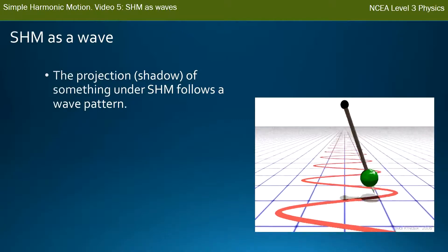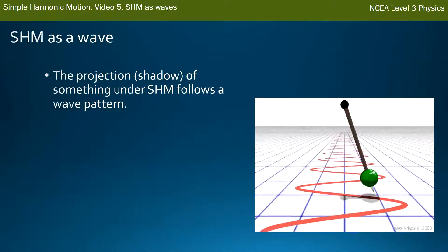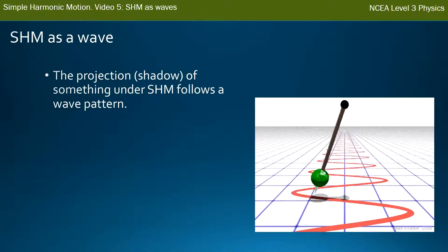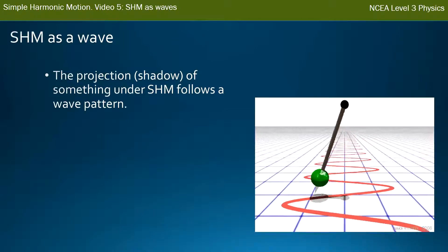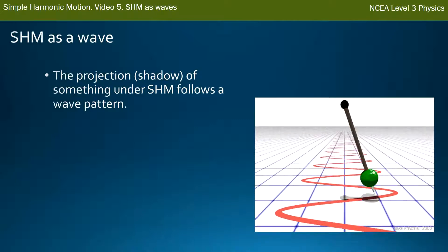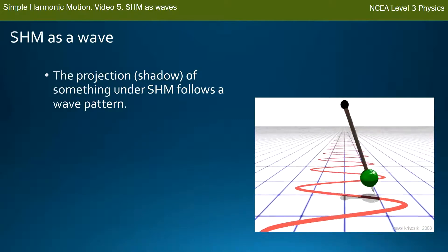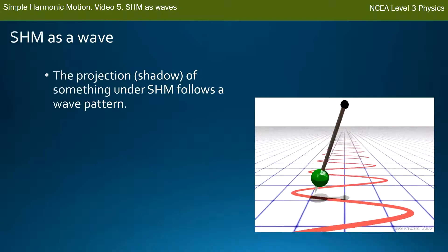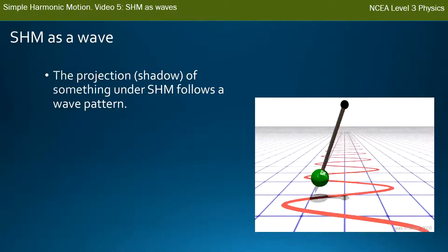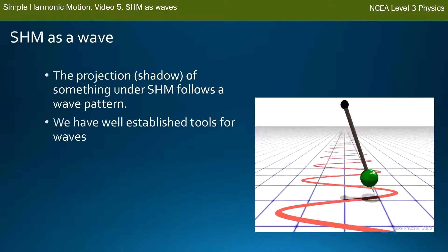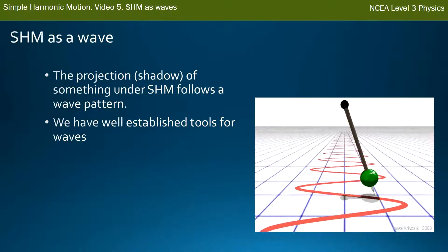Here we have a pendulum swinging back and forth, and underneath that you can see the shadow of the pendulum. Under the shadow, as you can imagine, a piece of paper that's moving along, and that shadow traces out the red pattern of the wave. So the projection of something that follows simple harmonic motion follows a wave pattern. The good news is we have well-established tools for dealing with waves, and because this follows a wave pattern, we can use those tools to deal with simple harmonic motion.